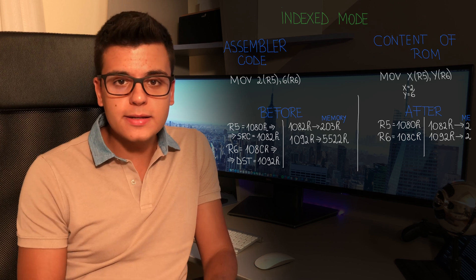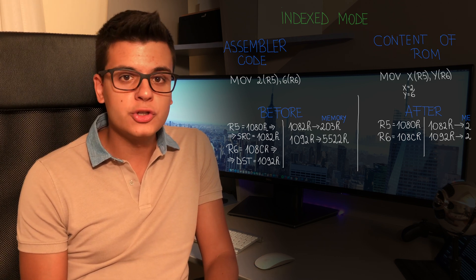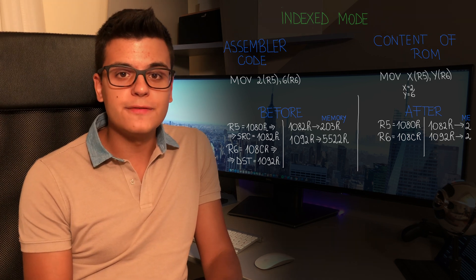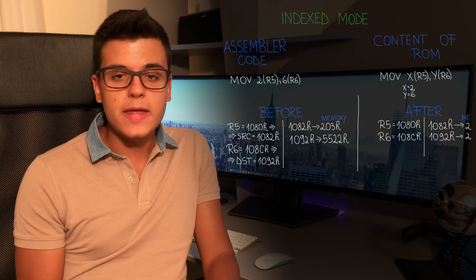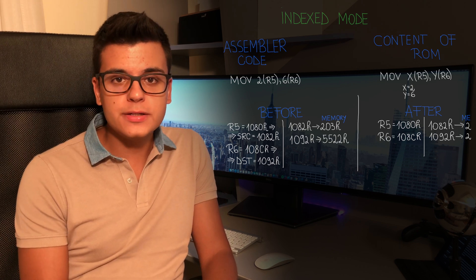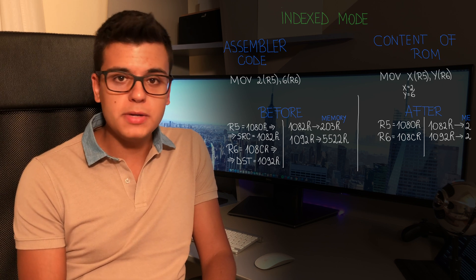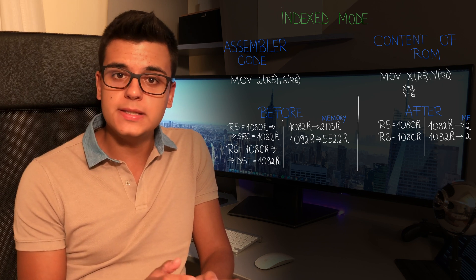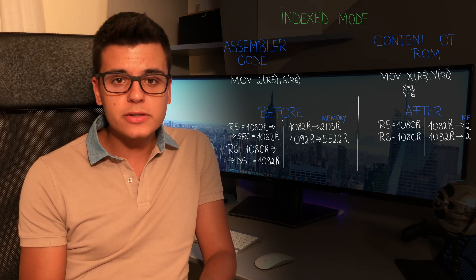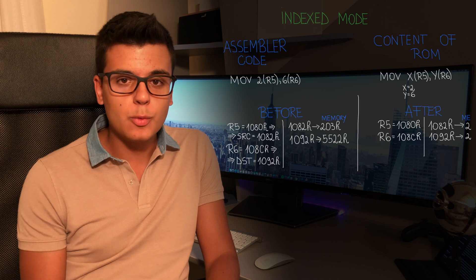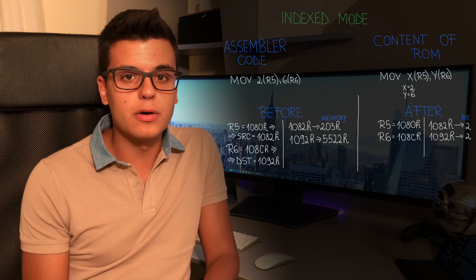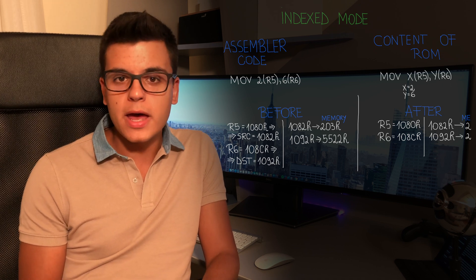Keep in mind these will be hexadecimal numbers. Unlike decimal numbers which have 10 symbols from 0 to 9, hexadecimal numbers have 16 symbols — from 0 to 9 and then from A through F. Going back to our example, the content of R5 is 1080, so plus 2 means the source address is going to be 1082. Similarly, to find the destination address, we add 6 to the value of R6, which is 108C, so the result is going to be 1092 — again, hexadecimal numbers.